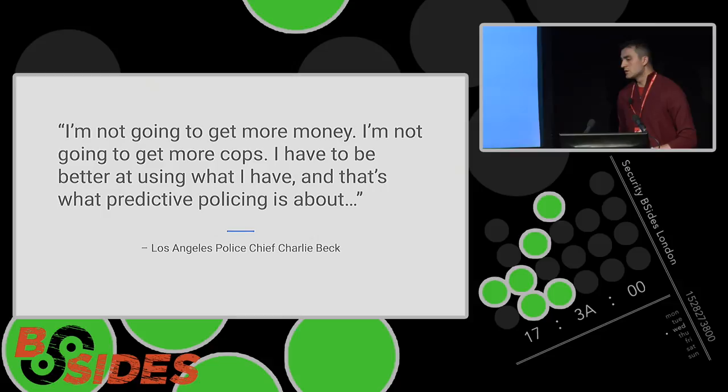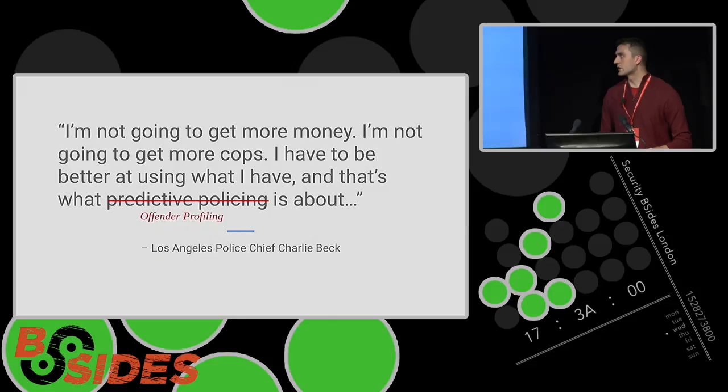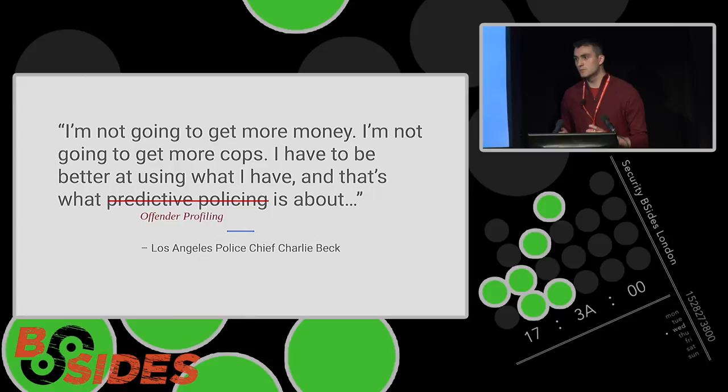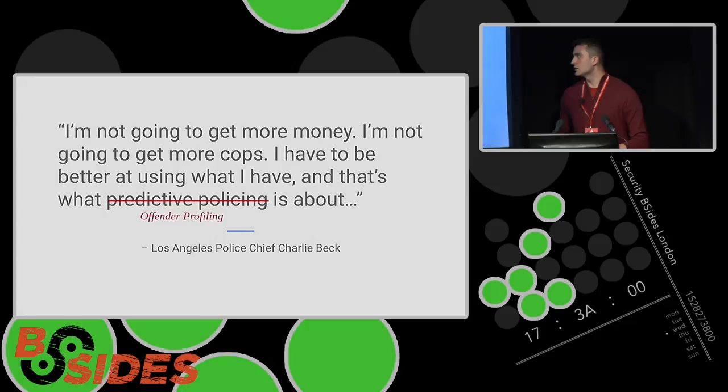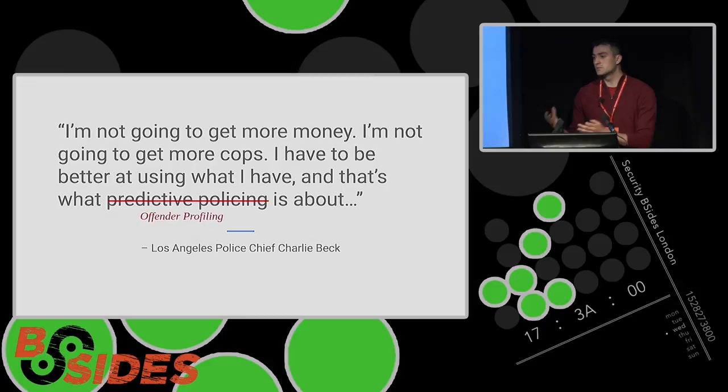So that's what offender profiling is — but why is it important? Why do we need it? Well, this is a quote from the Los Angeles police chief about predictive policing, but it describes offender profiling quite well. It's the idea that we're not getting more staff, we're not getting more money, we have to use what we have now effectively. That's the same in security, because security is not the buzzword it once was and doesn't have the endless budgets it once did. If we can spend some resources now using preemptive security, that can help us protect ourselves from something exponential in the future.